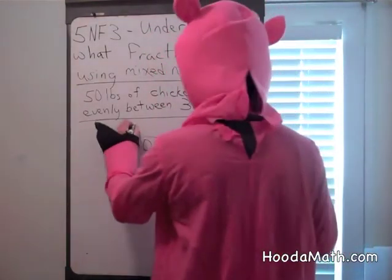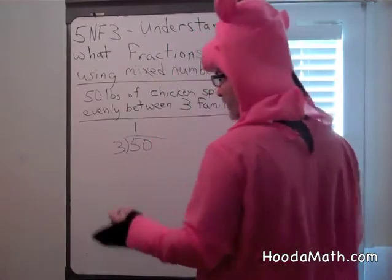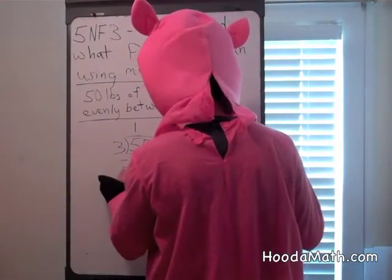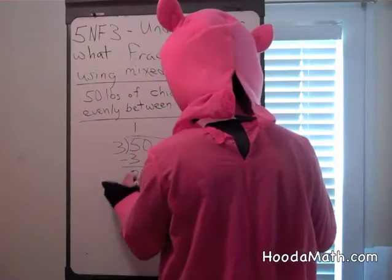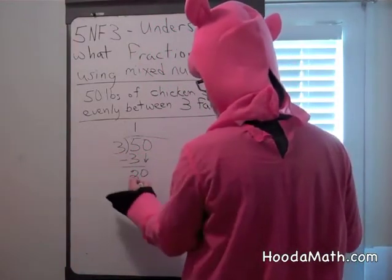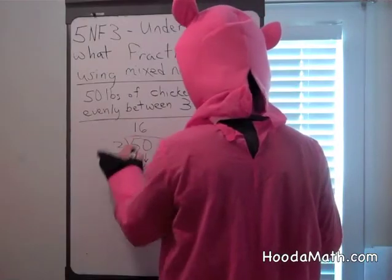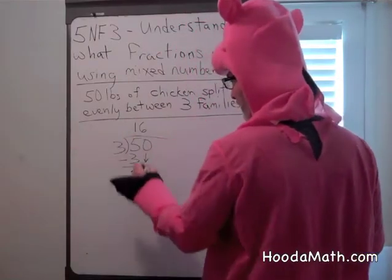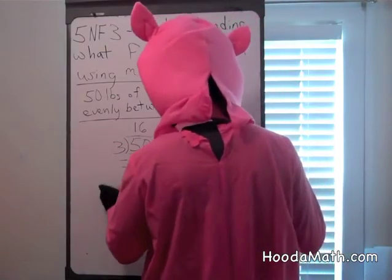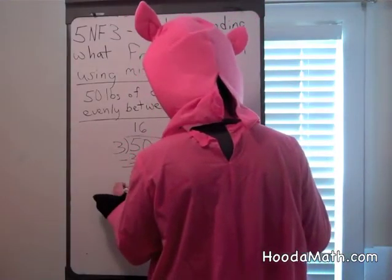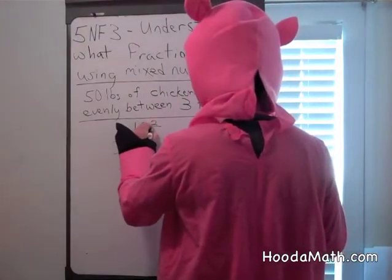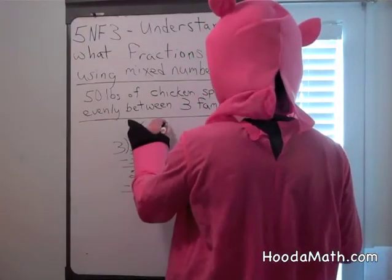Three goes into five once. How much does each family get? One times three is three. Subtract, and bring down the zero. Three goes into twenty. Six times three is eighteen. The remainder would be two-thirds of a pound.